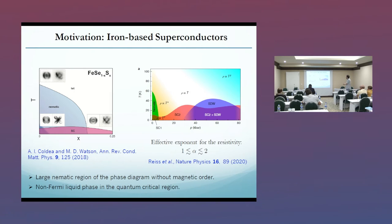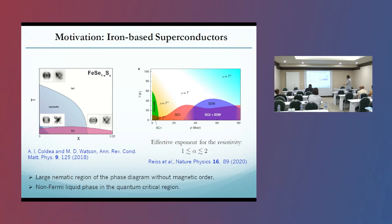There is also a non-Fermi-liquid regime close to this nematic region, where the resistivity is proportional to T to the power of alpha, and alpha lies between one and two. So there is an effective exponent, and this is very puzzling — we try to understand that.